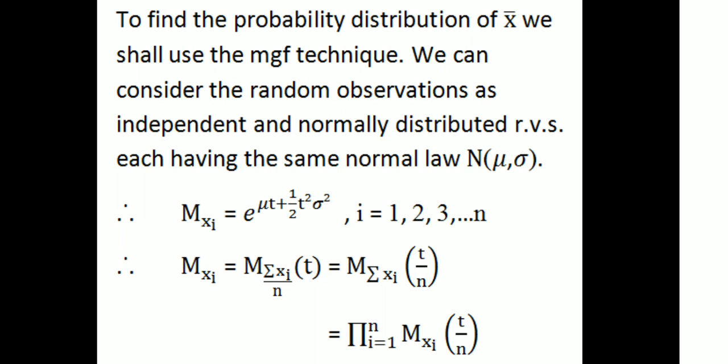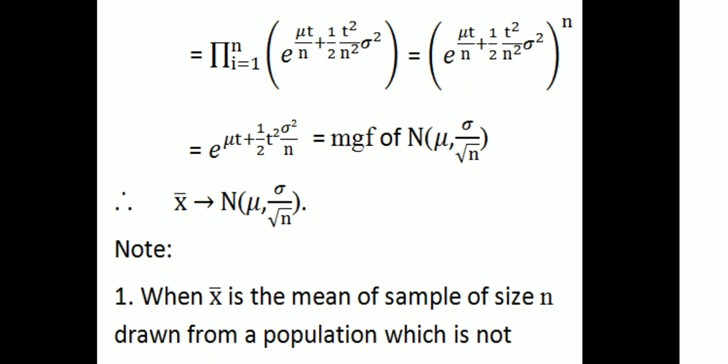Therefore, the moment generating function of xi is: M_xi(t) = e raised to (mu*t + half*t²*sigma²). For i = 1, 2, 3, ..., n. Therefore, the MGF of x-bar = MGF of (summation xi / n) of t = product from i=1 to n of M_xi(t/n) = product of e raised to (mu*t/n + half*(t/n)²*sigma²), which is the moment generating function of N(mu, sigma/root n).